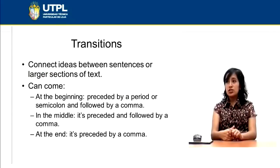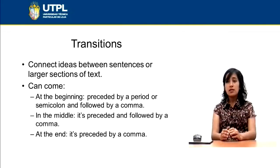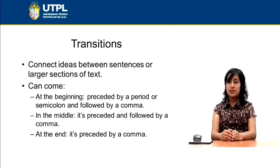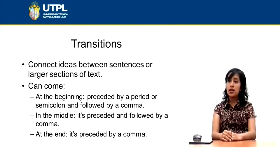Transitions are the third type of connectors. They connect ideas between sentences or larger sections of text. They can come at the beginning, in the middle, or at the end of a sentence. At the beginning, they are preceded by a period or semicolon and followed by a comma. In the middle, a transition is preceded and followed by a comma. At the end, it is preceded by a comma.